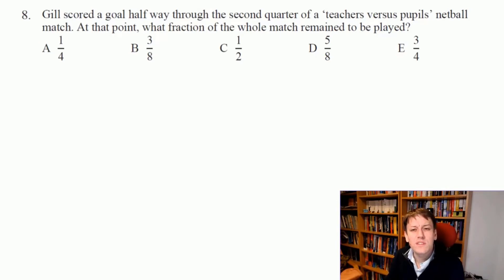Jill scores this goal halfway through the second quarter of the teachers versus pupils netball match. If we think about the whole match in quarters, let's just draw them out roughly: 1, 2, 3, 4 with time going forward. Then halfway through the second quarter would be here. If I actually split all the quarters in half, we can see that splits the game in eighths. That means there's 1, 2, 3 eighths before this point where the goal is. The question asks what fraction of the whole match remain to be played, so that's 1 minus 3 eighths, or you could just count 1, 2, 3, 4, 5 eighths that are left to be played. The answer is D.